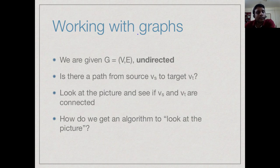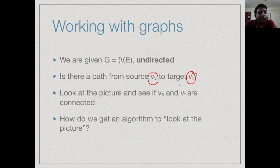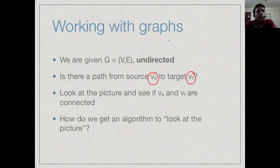The abstract problem, sticking to undirected graphs, is: given an undirected graph with a source vertex Vs and a target vertex Vt, is there a way to go from Vs to Vt? As human beings we can take a look at the graph and visually identify such a path. But when we write an algorithm to manipulate a graph, how do we get the algorithm to look at the picture? We need a way to represent this graph and give it as input to our algorithm.